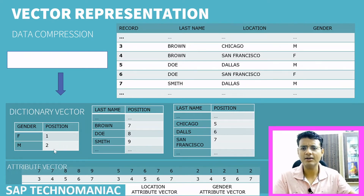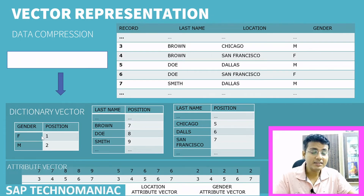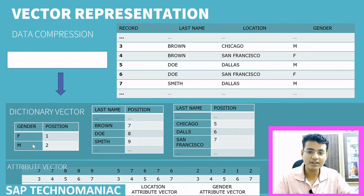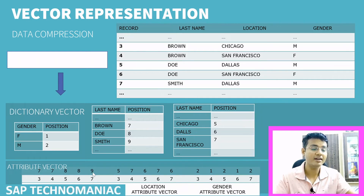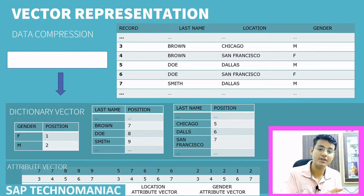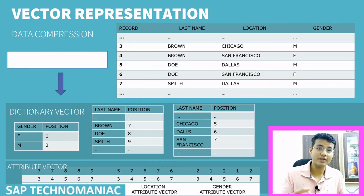The advantage is that we can easily process data when it is stored as integer values. Also, only the unique values are stored in the dictionary vector — for gender, only female and male; for last name, only three unique values. In the attribute vector, only the numbers like 7, 7, 8, 8, 9 are stored. This is the basic form of compression. After this, SAP also does more advanced compression if identical values are present.